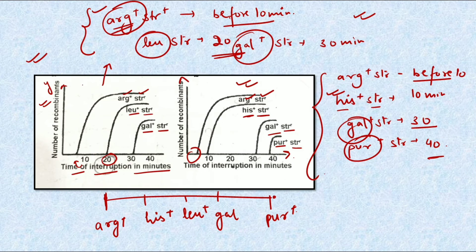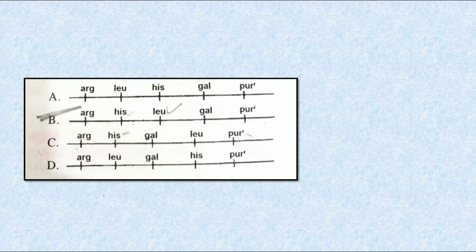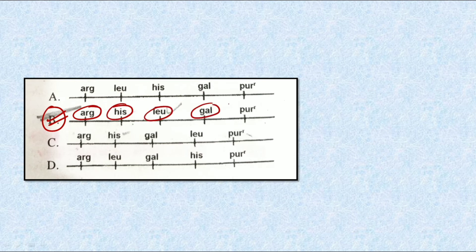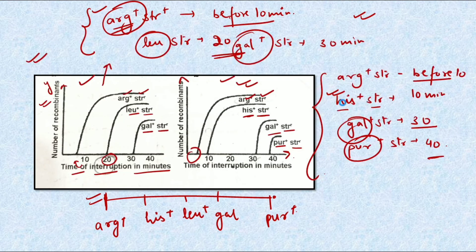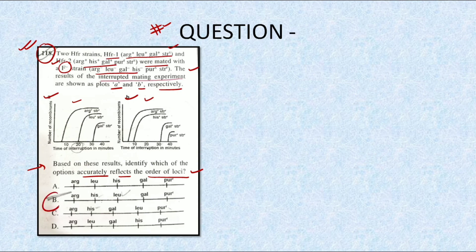Based on the analysis of both graphs, we have plotted our gene order. Comparing with the options given, option B is the correct answer: the order is arginine → histidine → leucine → gal → pur.